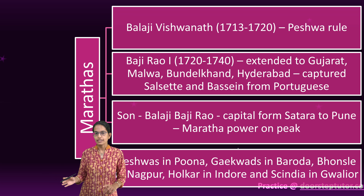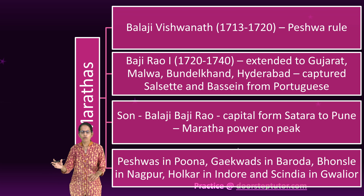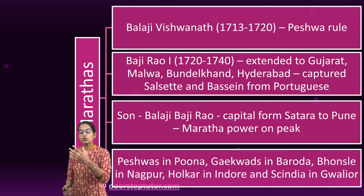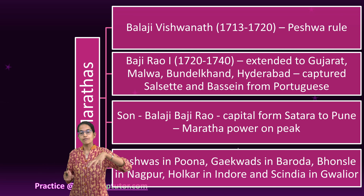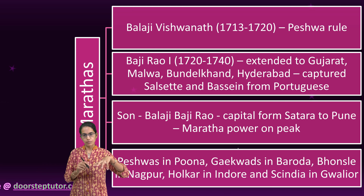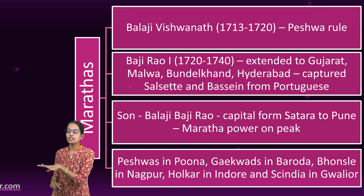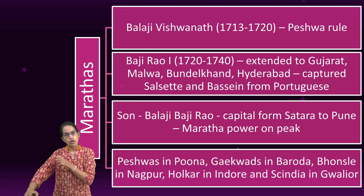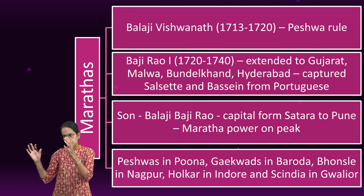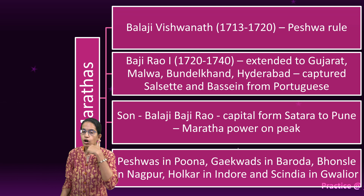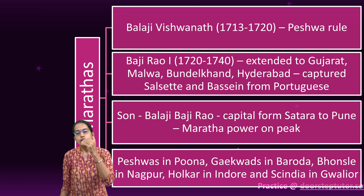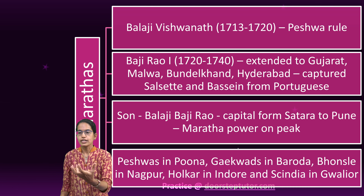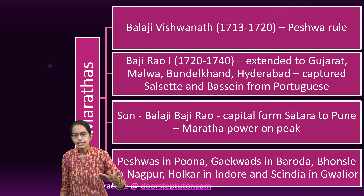Those were the two taxes. Chauth was one-fourth of the revenue collected from the nearby areas of the Maratha province. Sardeshmukhi was one-tenth of the revenue collected on the territories outside the Maratha region. This was the two taxes that were imposed and revenue started to flow in.